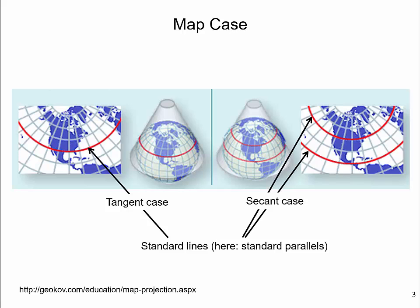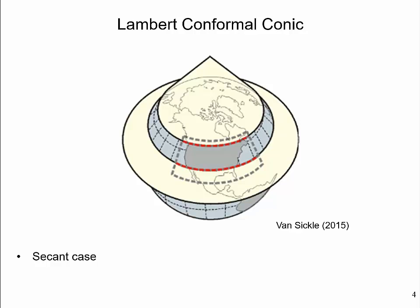The case with two standard parallels is called the secant case. In the secant case, the virtual cone intersects the reference globe along two parallels. The advantage of the secant case is that it keeps maximum distortion low over a large area. The Lambert-conformal conic projection uses the secant case with two standard parallels.